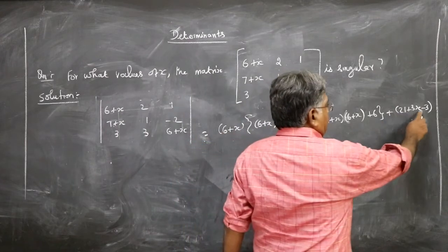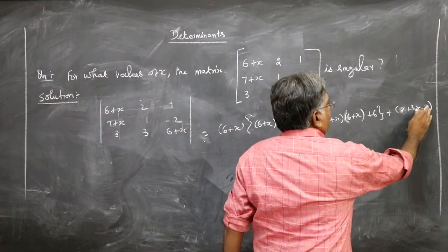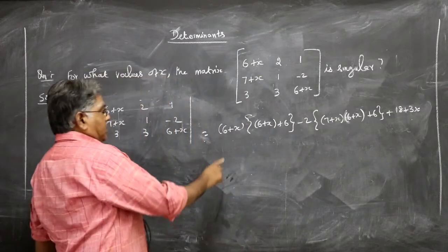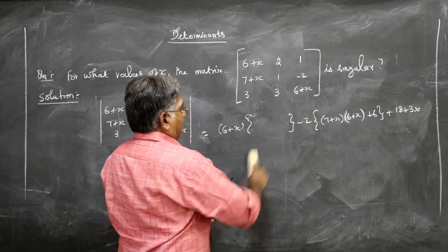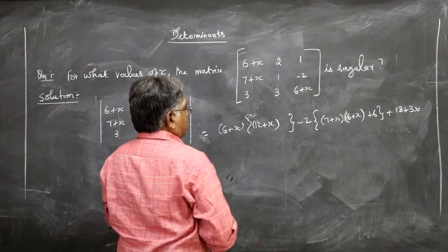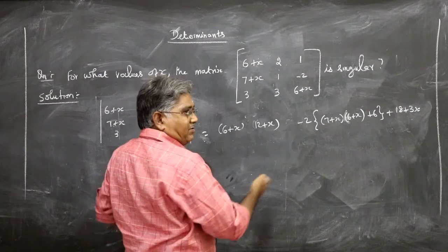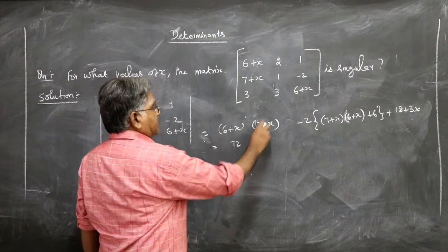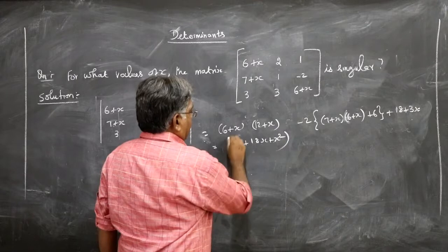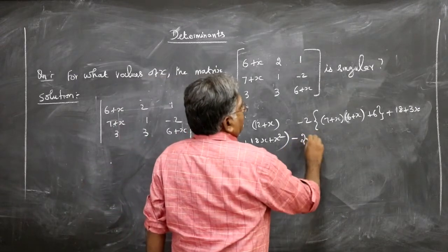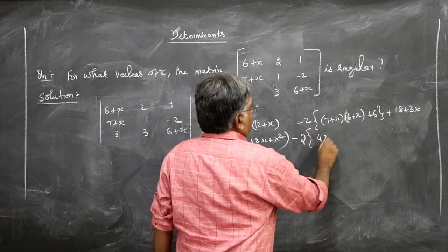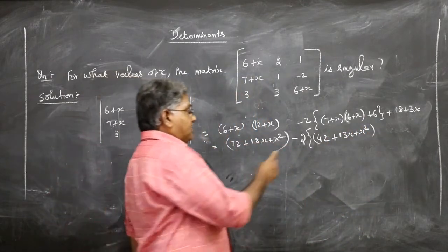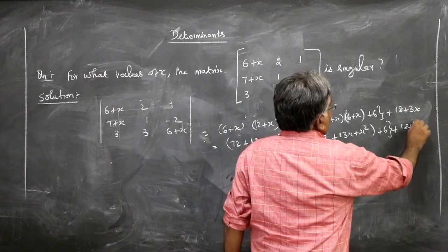After simplification: 21 minus 3 gives 18, so we have 18+3x. Here also 6+x+6 gives 12+x. This would expand to 72 + 6x + 12x + 18x + x² minus 2 into (42 + 13x + x²), plus 6 plus 18 plus 3x, all set equal to 0.